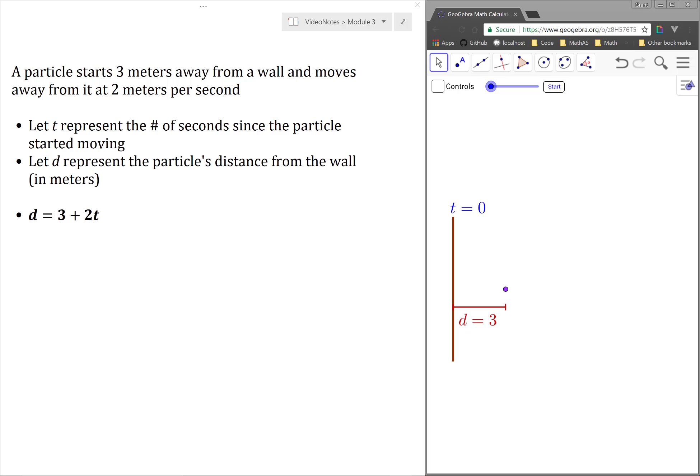A particle is 3 meters away from a wall, and all of a sudden it begins moving away from the wall at a constant speed of 2 meters per second. I have this shown here.